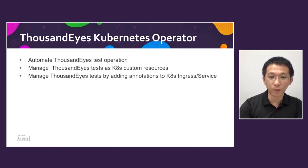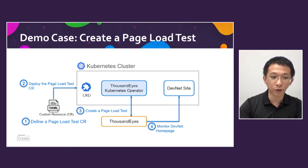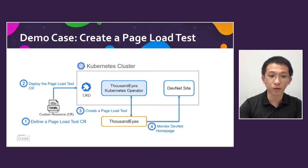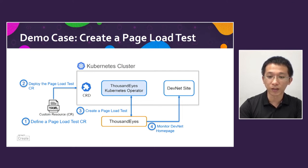Now let me show a quick demo. In this demo, I will create a page load test using a custom resource to monitor the DevNet homepage. As I have installed this operator in my Docker Desktop Kubernetes, first I will define a page load test custom resource, then deploy it to my Kubernetes. Once this resource is created, this operator will create a page load test in the SoundEyes dashboard to monitor the DevNet homepage.